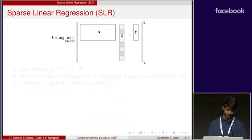So given a matrix A with n samples each of d dimension and an observation vector of length y, the goal is to find the sparse vector x bar which minimizes the least squares objective.